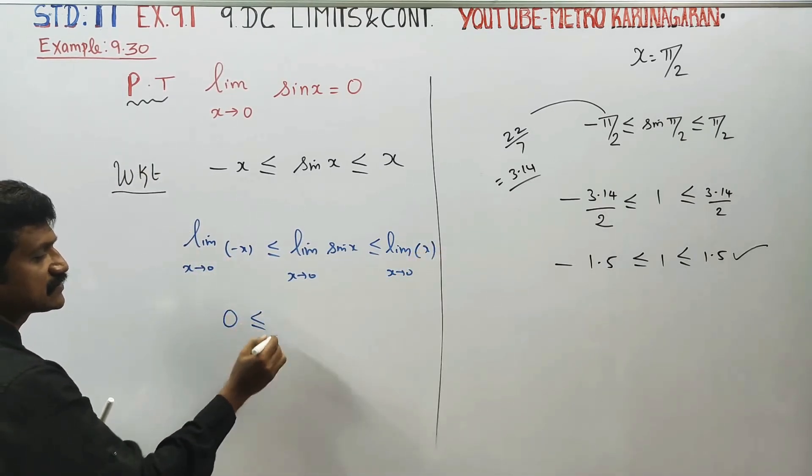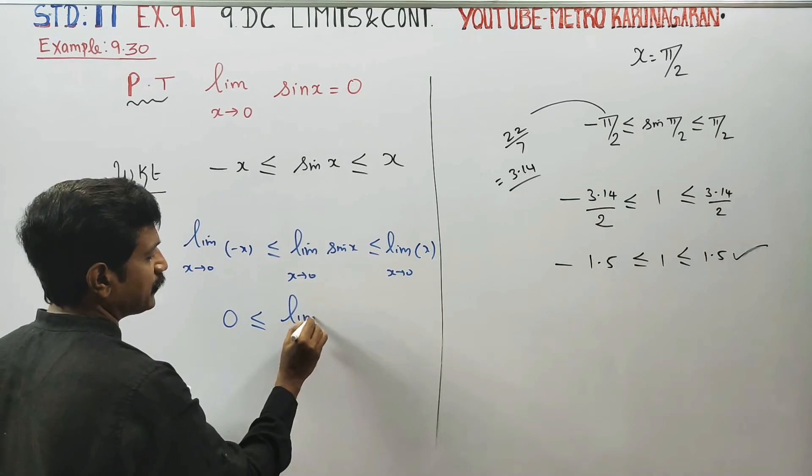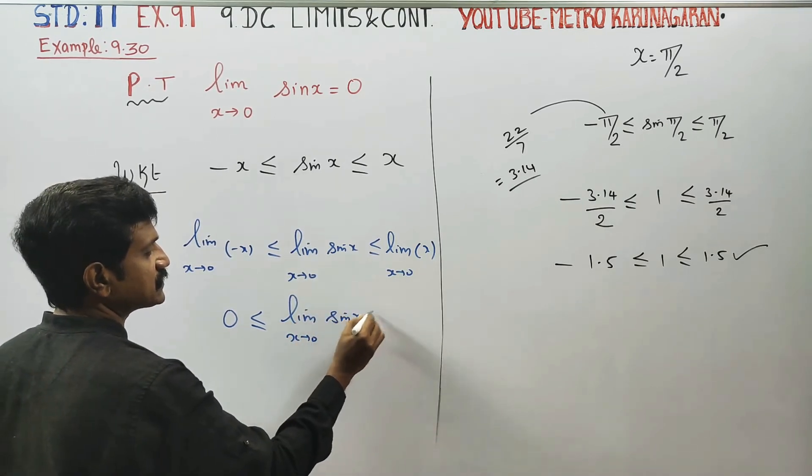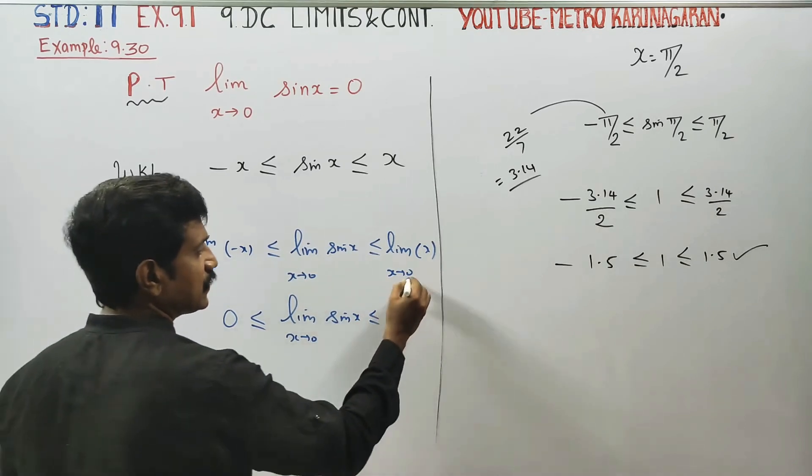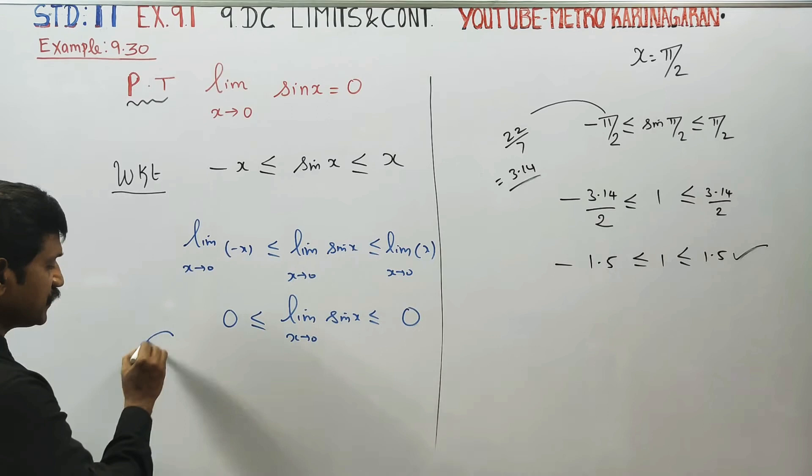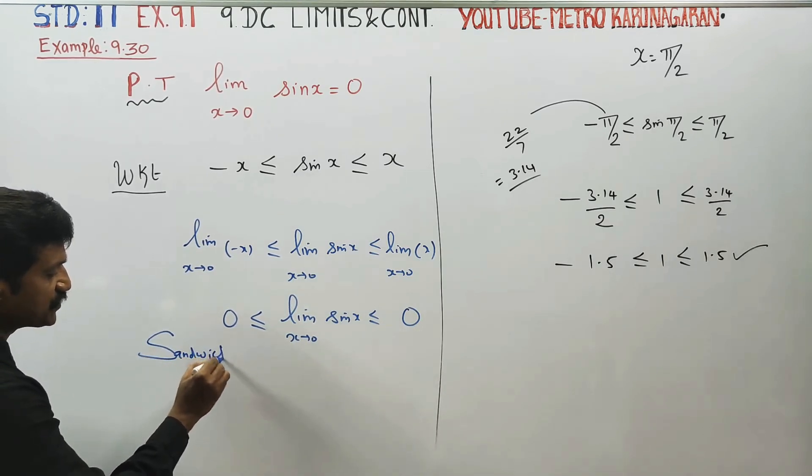Less than or equal to 0. By the sandwich theorem, the limit of sin x as x→0 must also equal 0.